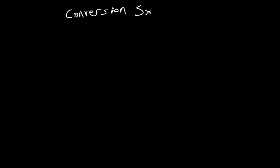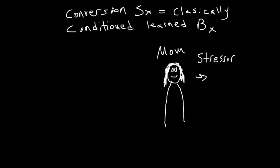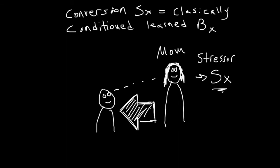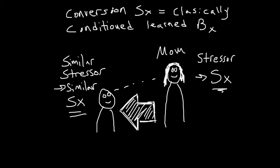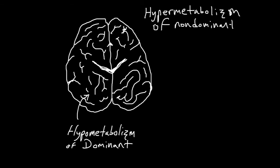Conversion disorder can also be viewed in the context of learning theory. Conversion symptoms can be seen as a piece of classically conditioned learned behaviors. The symptoms of illness learned in childhood are called forth as a means of coping with an otherwise impossible situation. Biologically, it's thought that the cause of conversion disorder is from hypometabolism of the dominant hemisphere and hypermetabolism of the non-dominant hemisphere, implicated in impaired hemispheric communication.